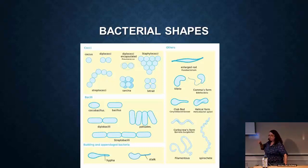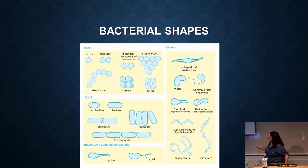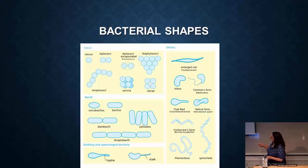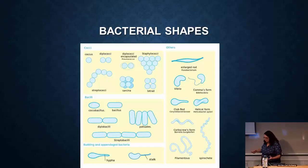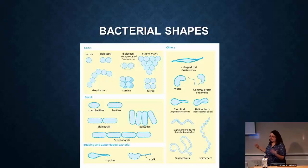Then you have some funny-looking ones. There are vibrio, which look like a comma shape. Some bacteria actually have an appendage called a stalk attached to them. Others look like a corkscrew. And then you have helical ones, among many other combinations. One of the classic ways to categorize bacteria is to look at their shape — round, rod, corkscrew, etc. — to determine what kind of bacteria you're looking at.